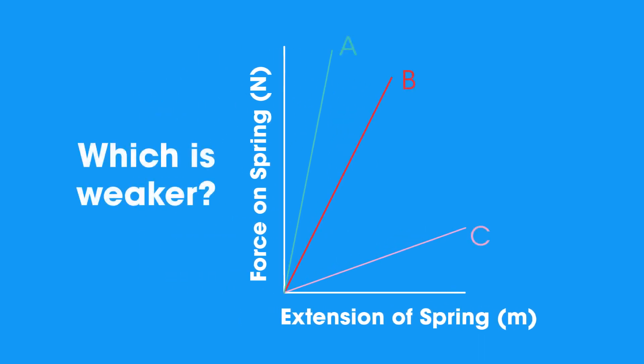Which is the weakest spring? A, B or C? Pause the video while you think. Well, C is the weakest spring, needing only a small force to make a big extension.